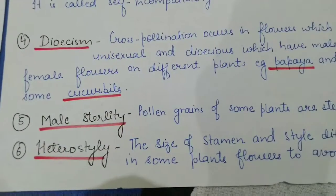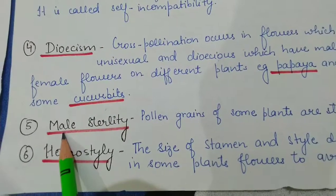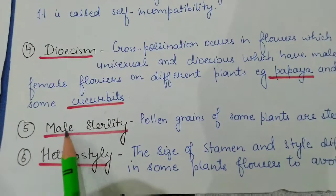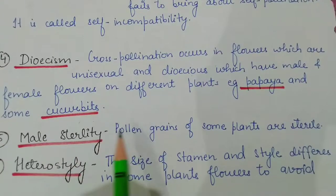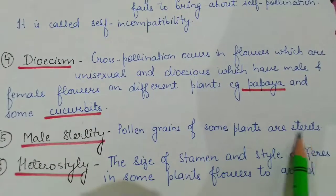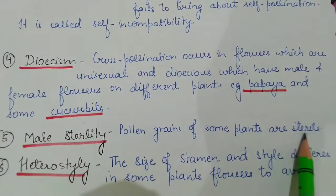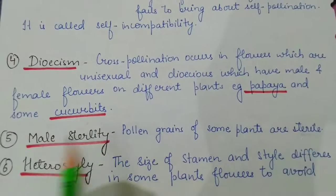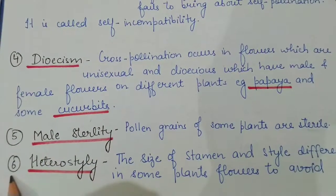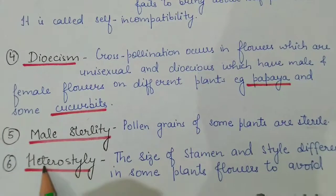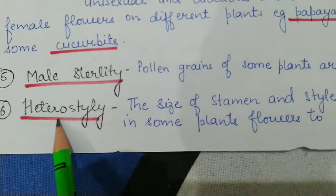The fifth floral character is male sterility. In some plants, the pollen grains are sterile, meaning they are not functional — they are not fertile. This is called male sterility.